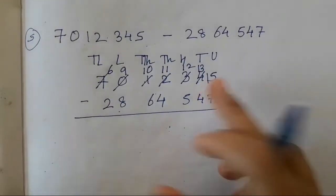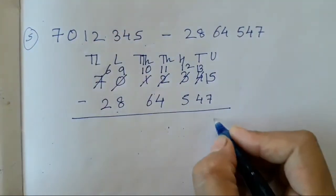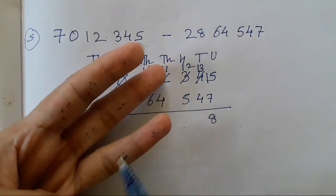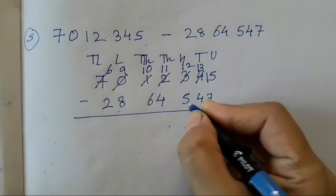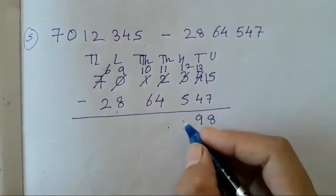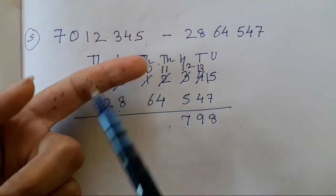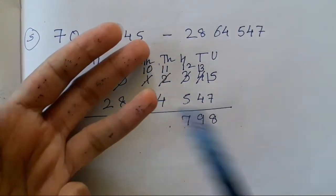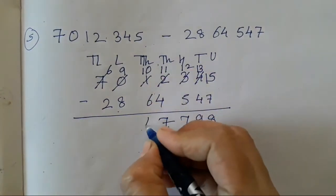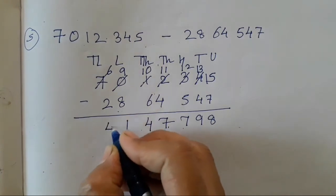Now subtract. Count after 7: 8, 9, 10, 11, 12, 13, 14, 15 — so 8. Count after 5 to 12: 6, 7, 8, 9, 10, 11, 12 — so 7. Count after 5 to 12: 6, 7, 8, 9, 10, 11, 12 — so 7. 5 and 4: count to 11 — so 7. 10 minus 6 is 4. 9 minus 8 is 1. 6 minus 2 is 4.